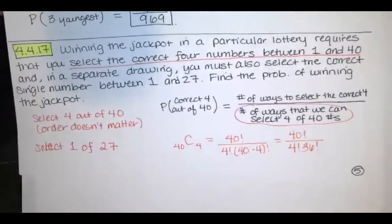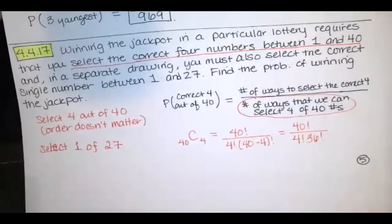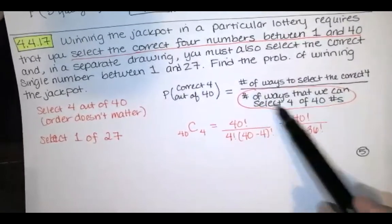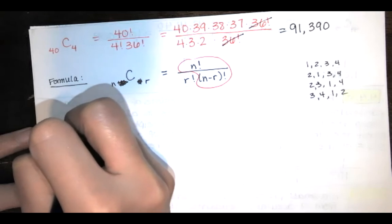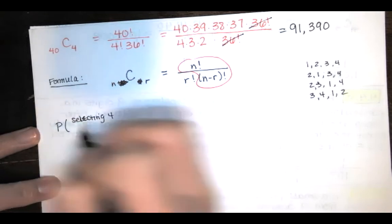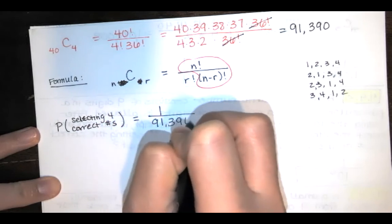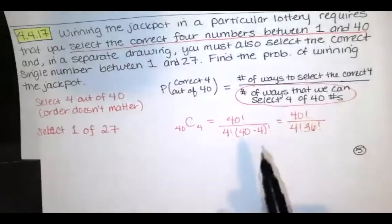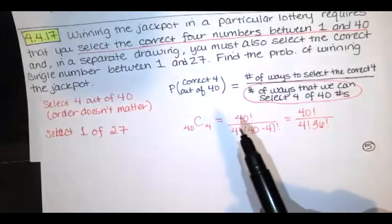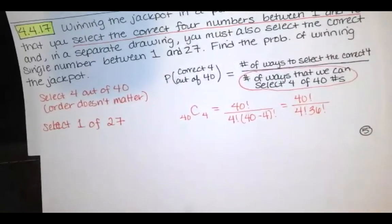Winning the jackpot requires you select the correct four numbers between 1 and 40. So we want the number of ways to select the correct four. Well, there's only one way to select the correct four, and then divide by the total number of ways that you could select four out of 40. The probability of selecting the correct four is 1 out of 91,390. And in order to win the jackpot, we also must select the correct single number between 1 and 27.